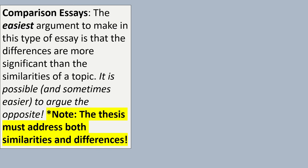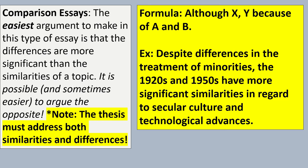The second type of essay or the second thinking skill I want to address will be comparison essays, where you're talking about similarities, differences. Typically in this type of essay, what's the easiest argument to make? Usually that the differences are more significant than the similarities of a topic. However, as always, sometimes it's easier to argue the opposite. So, the hard part about it is just the thesis statement has to address both similarities and the differences. Let me give you an example. Despite differences in the treatment of minorities, the 1920s and 50s have more significant similarities in regard to secular culture and technological advances. So, hopefully you can kind of see that they will dedicate one body paragraph to the differences in treatment of minorities, but they'll have two body paragraphs dedicated to secular culture and technological advances.